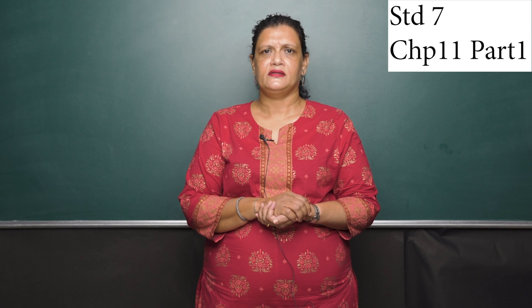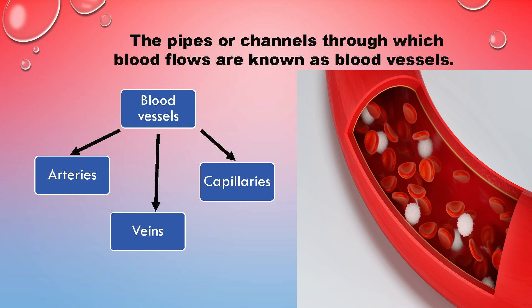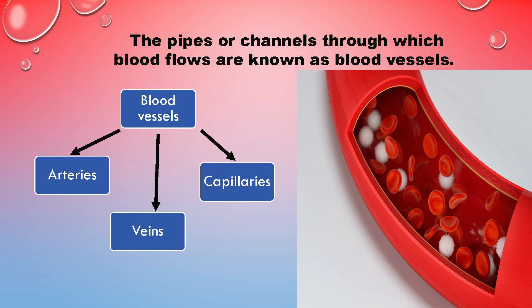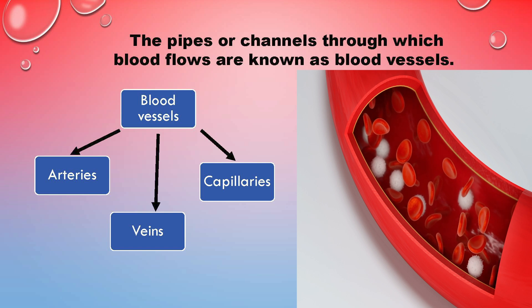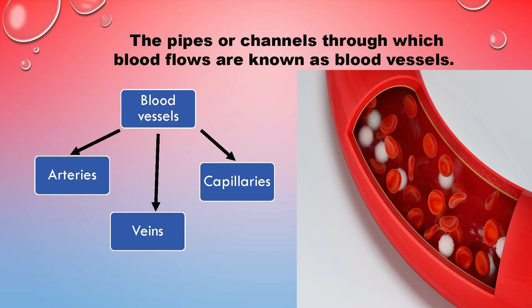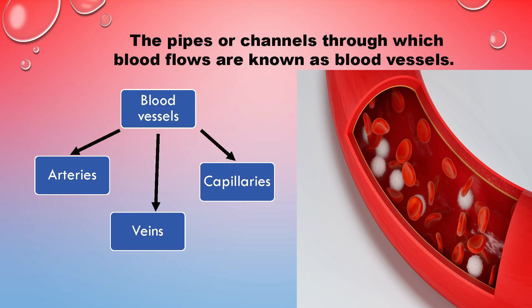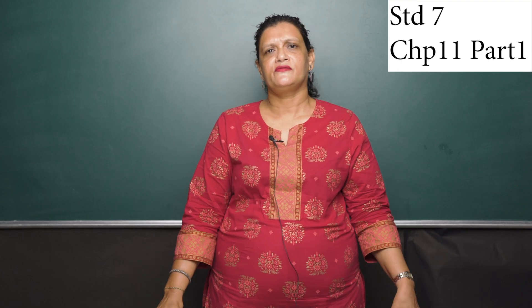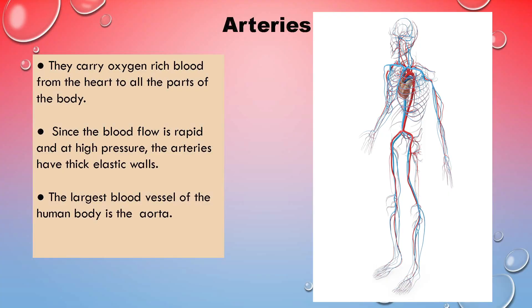Let us next study about blood vessels. Where does this blood travel? The tubes or channels through which the blood flows are referred to as blood vessels. We human beings have three kinds of blood vessels in our body, namely arteries, veins and capillaries. Arteries are those blood vessels which carry oxygenated blood — that is blood rich in oxygen — from the heart to various parts of the body. As the heart beats and pumps blood into the arteries, it comes with great force and speed, and as a result the walls of the arteries have to be elastic and thick.